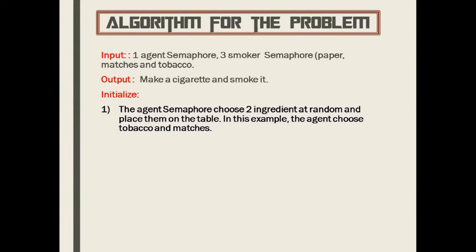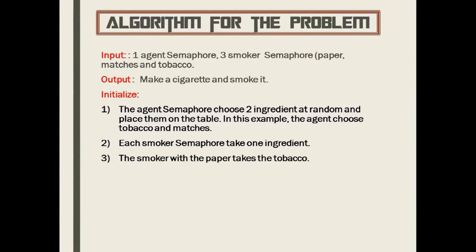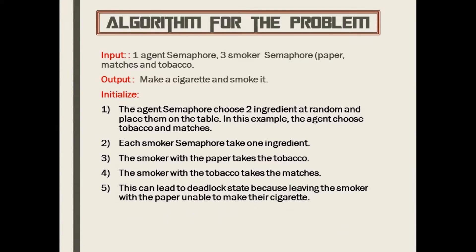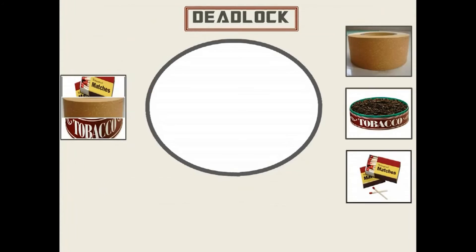In this example the agent chooses tobacco and matches. Each smoker semaphore wakes up and takes one ingredient from the table — for example, the smoker with paper takes tobacco, and the smoker with tobacco takes the matches. This results in the deadlock state because it leaves the smoker with paper unable to make their cigarette.